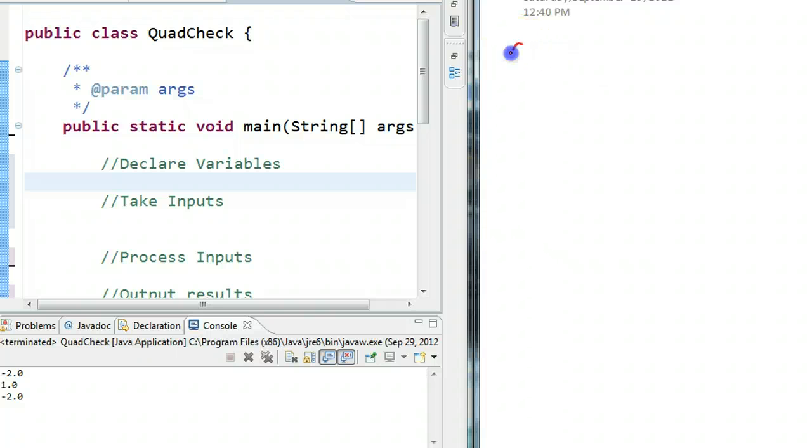So, if you remember, a quadratic expression is 0 equals Ax squared plus Bx plus C. And we can give a concrete example, so 0 is equal to, say, x squared plus 5x plus 6.